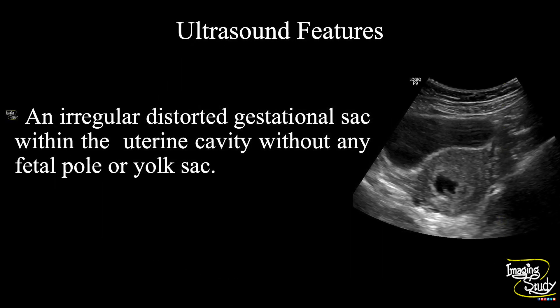So in summary, an irregular distorted gestational sac is noted within the uterine cavity without a fetal pole or yolk sac, indicating this is an incomplete abortion.